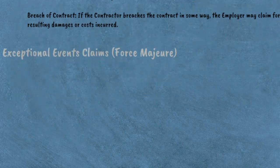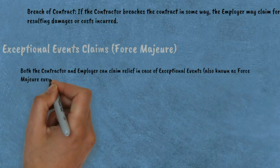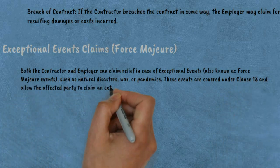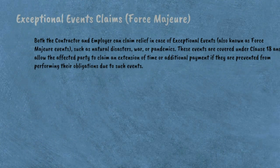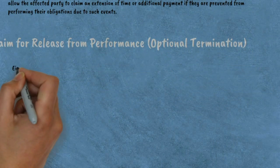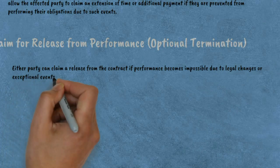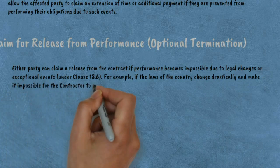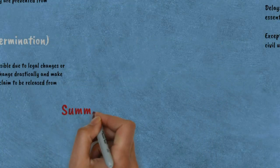Fifth, exceptional events claims — force majeure. Both the contractor and employer can claim relief in case of exceptional events, also known as force majeure events, such as natural disasters, war, or pandemics. These events are covered under Clause 18 and allow the affected party to claim an extension of time or additional payment if they are prevented from performing their obligations. Additionally, either party can claim a release from the contract if performance becomes impossible due to legal changes or exceptional events under Clause 18.6 — for example, if the laws of the country change drastically and make it impossible for the contractor to perform its obligations.